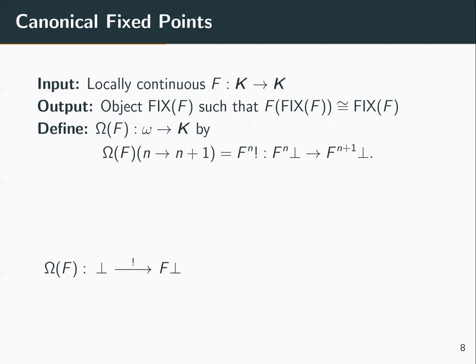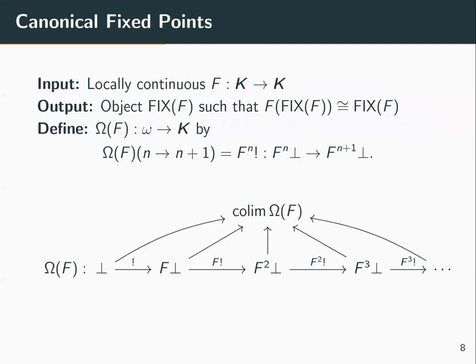More concretely, we map zero to the initial object and one to F of the initial object, with the morphism given by initiality. We then iteratively apply F to produce the rest of the chain. If the colimit of this omega-chain exists, it will be a fixed point of the functor F.